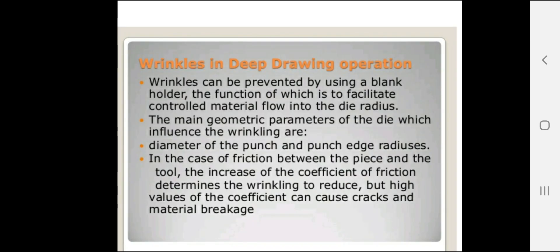Another defect is wrinkles in deep drawing operations. Wrinkles can be prevented by using a blank holder, the function of which is to facilitate controlled material flow into the die radius. The main geometric parameters of the die that influence wrinkling are the diameter of the punch and punch edge radius. An increase in coefficient of friction can cause wrinkling, but high values of friction can also cause cracks and material breakage.